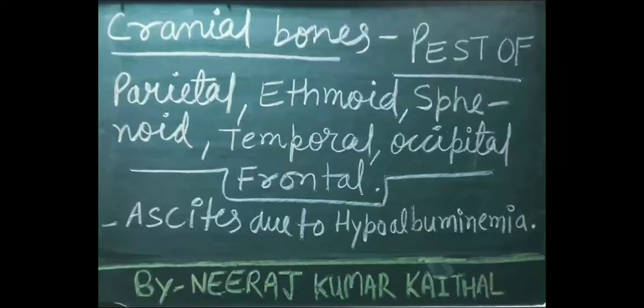There are a total of 6 types of cranial bones. These are: parietal bone, ethmoid bone, sphenoid bone, temporal bone, occipital bone, and frontal bone.